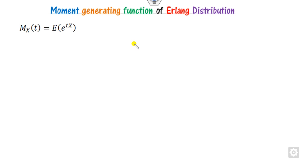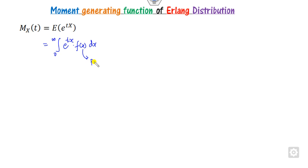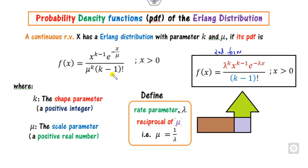Based on this PDF we will define the moment generating function. The definition of the MGF is the expectation of e raised to the power tx, integrated against f(x). Here f(x) is the PDF of the Erlang distribution.